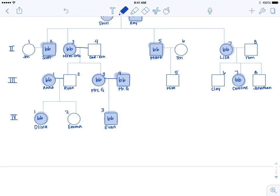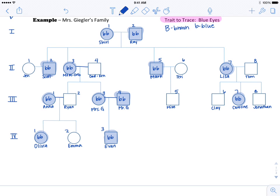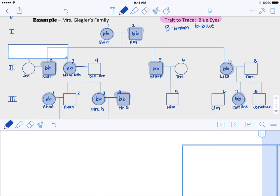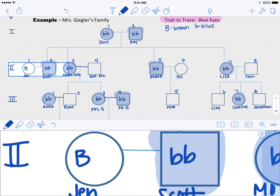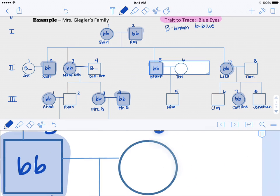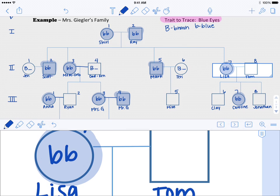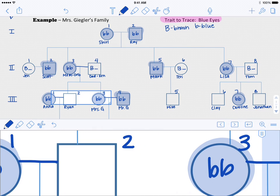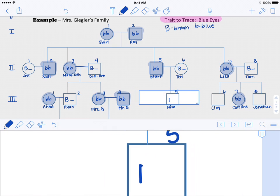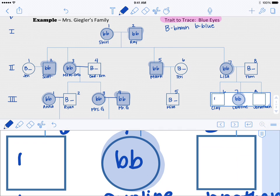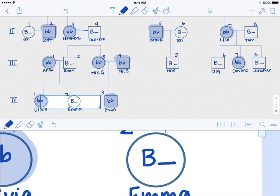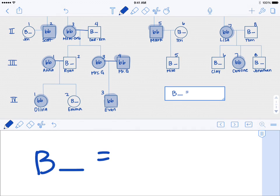Now everybody else we're going to assume has brown eyes in this situation. What that means is we can go in and we know they have to have at least one big B. Now we may not know what that other trait is yet so I'm gonna call it big B blank. What this big B blank means is that they could be big B big B or big B little b. It's allowing for that option for us.